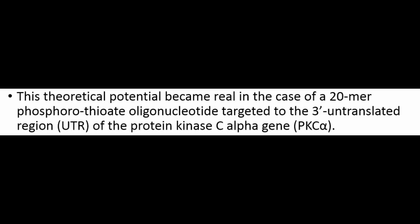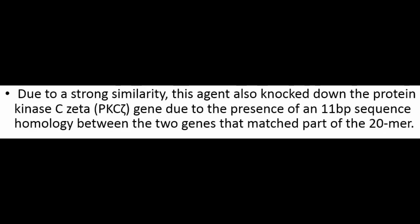This theoretical potential became real in the case of a 20-mer phosphorothioate oligonucleotide targeted to the 3' untranslated region (UTR) of the protein kinase C-alpha gene (PKC-α). Due to a strong similarity, this agent also knocked down the protein kinase C-zeta (PKC-ζ) gene due to the presence of an 11 bp sequence homology between the two genes that matched part of the 20-mer.